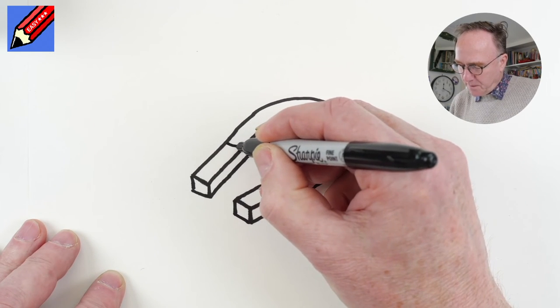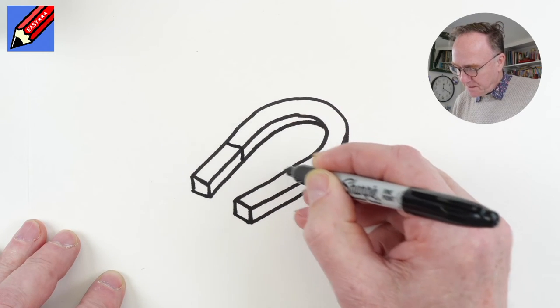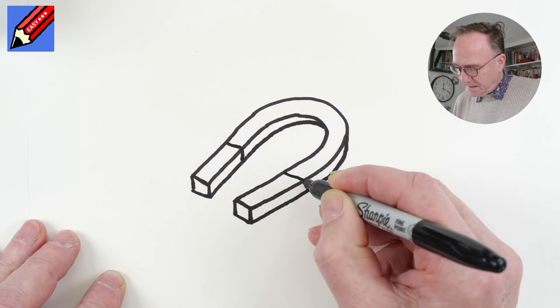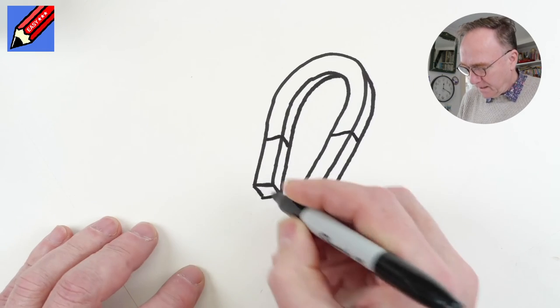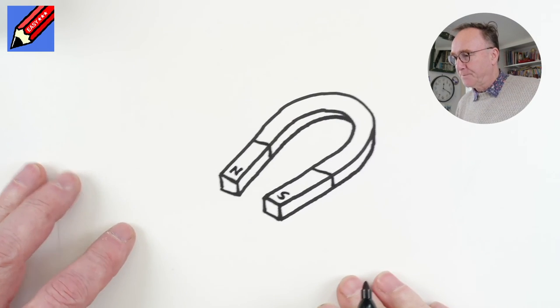We're going to want to know where the red paint starts so that will come straight across there like that and down and then you might want to put an N and an S like that.